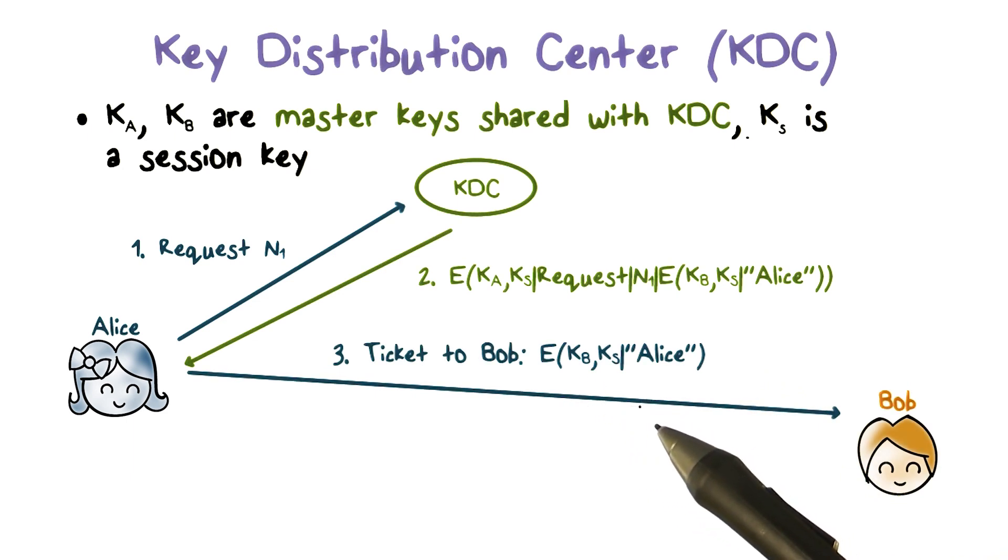Alice then sends the ticket to Bob. Note that only Bob can decrypt the ticket because it is encrypted using KB, the master key shared between Bob and KDC. When Bob decrypts the ticket, he knows that the ticket is created by the KDC because only the KDC can encrypt the ID of Alice properly. And he knows that the session key KS was created by KDC and is for communication with Alice.